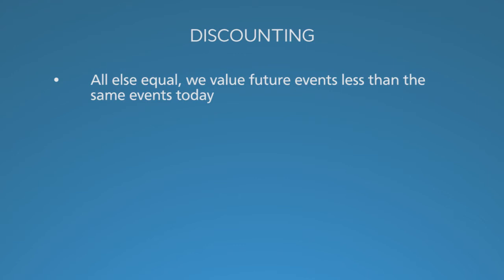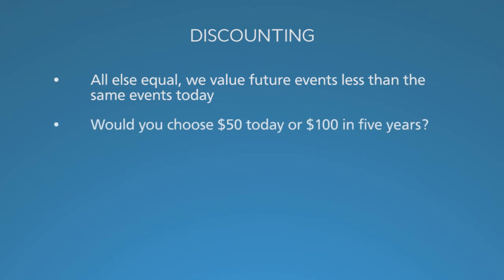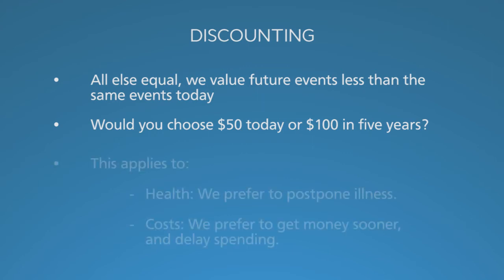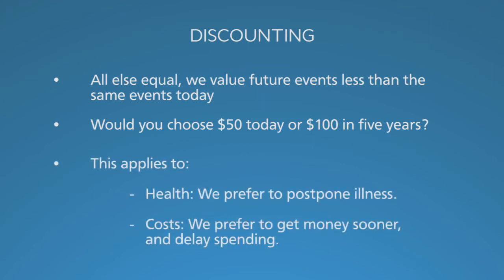How strong is that preference? Would you choose $50 today or $100 in five years? If you find the amount of money today that you'd consider equally desirable to $100 in five years, you can calculate your time preference adjustment rate — your discount rate. These discount considerations apply to both health and costs.